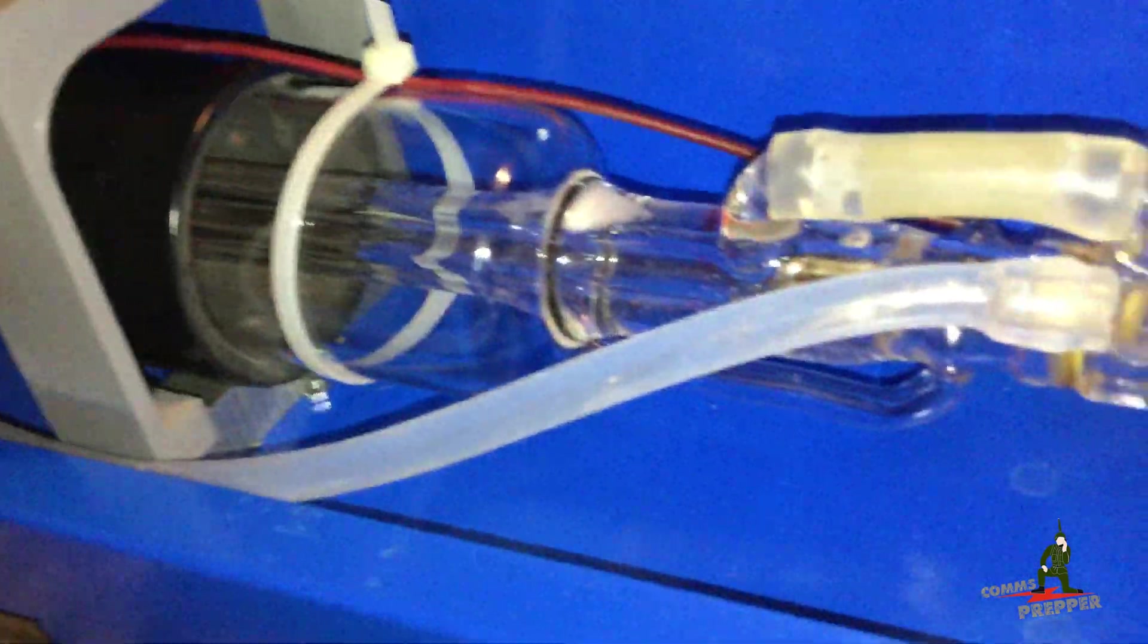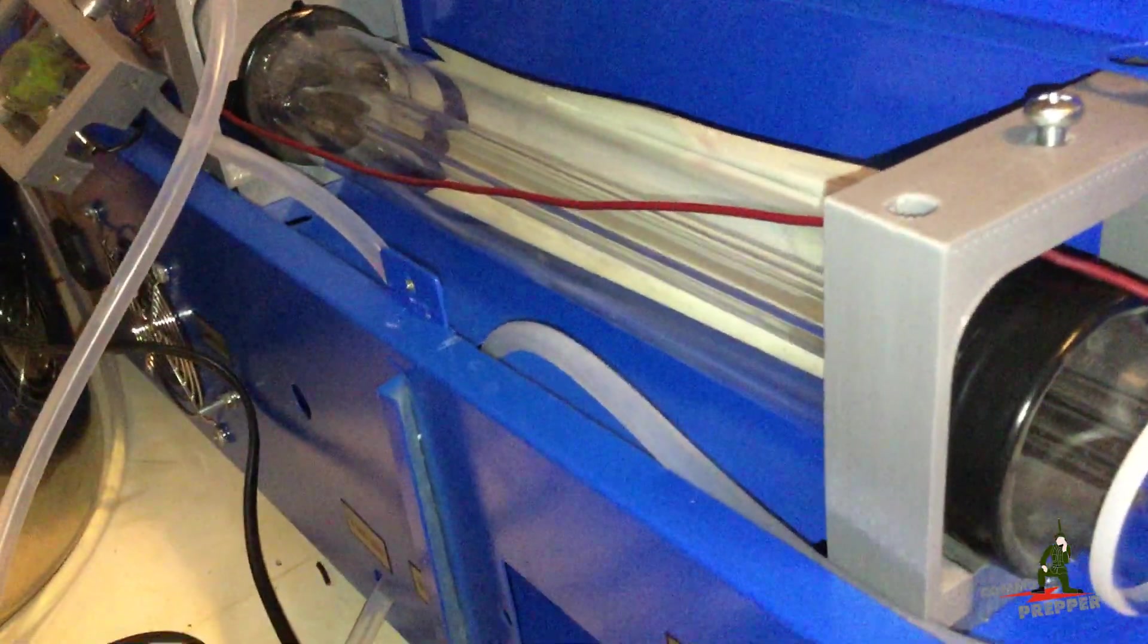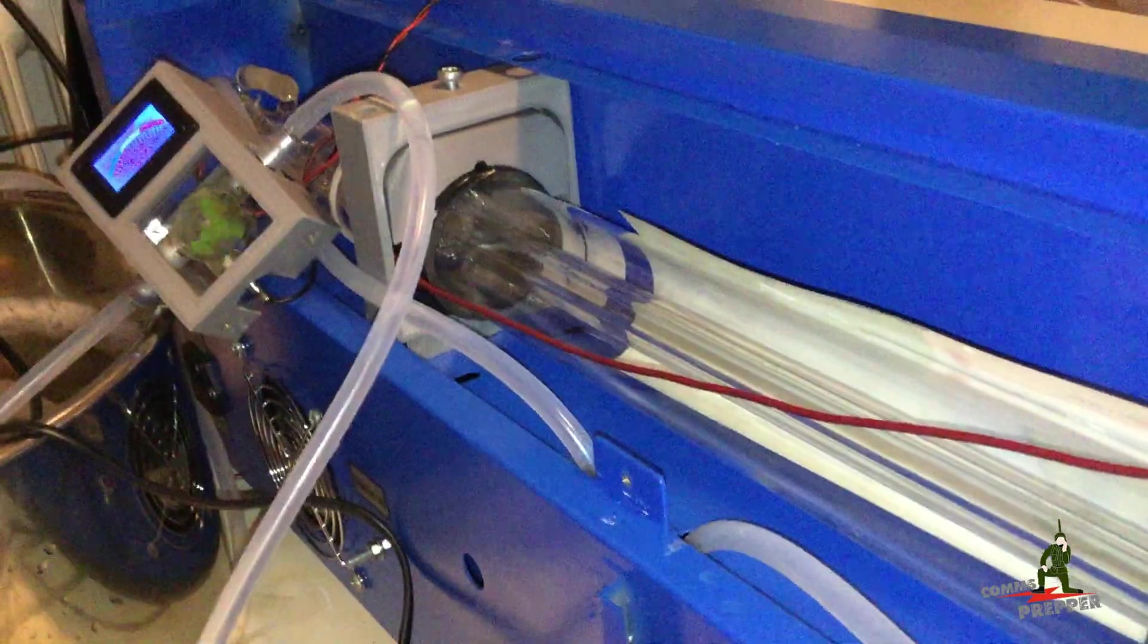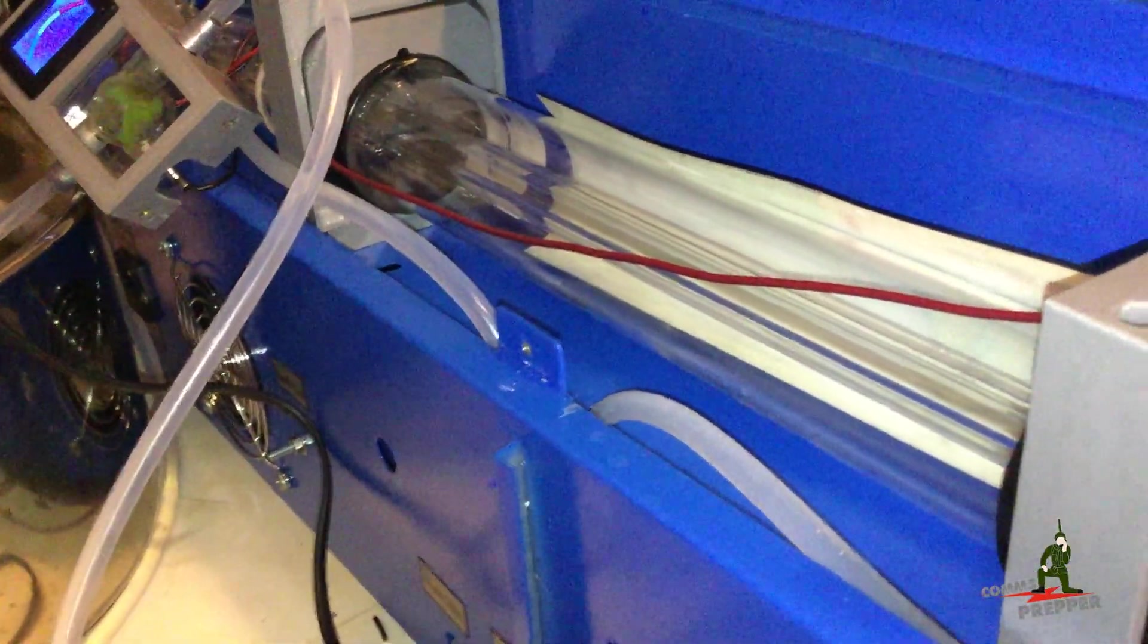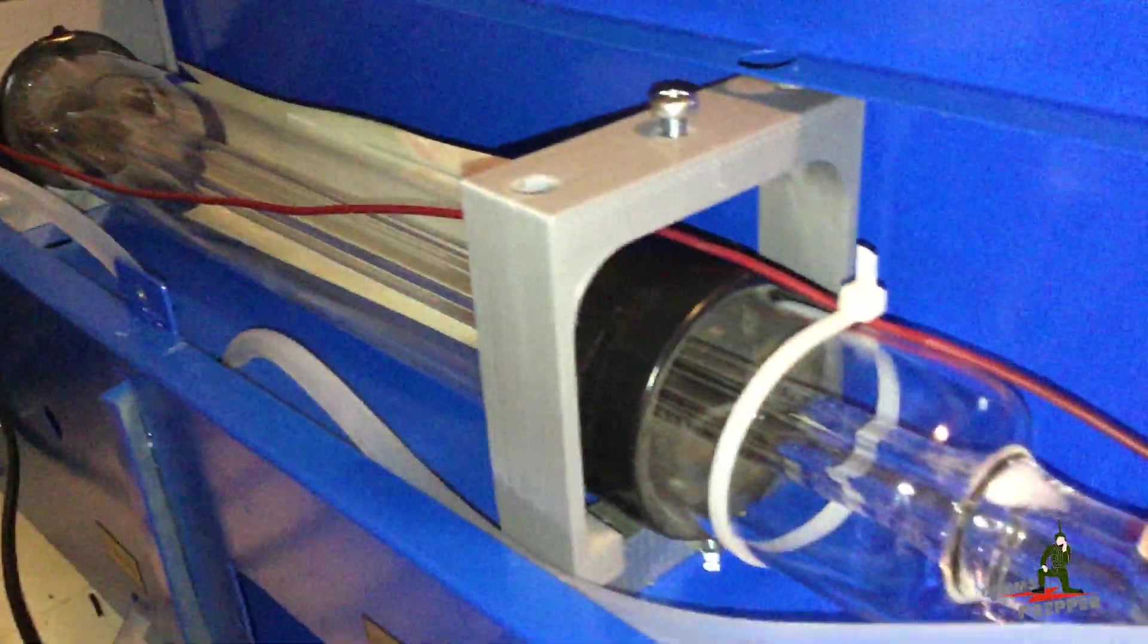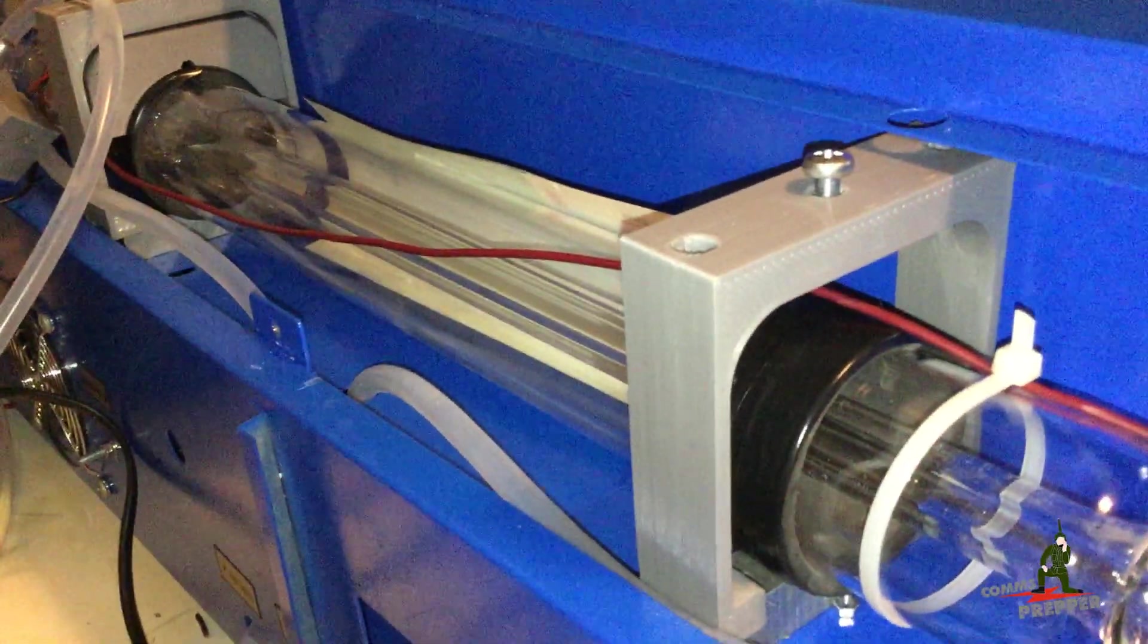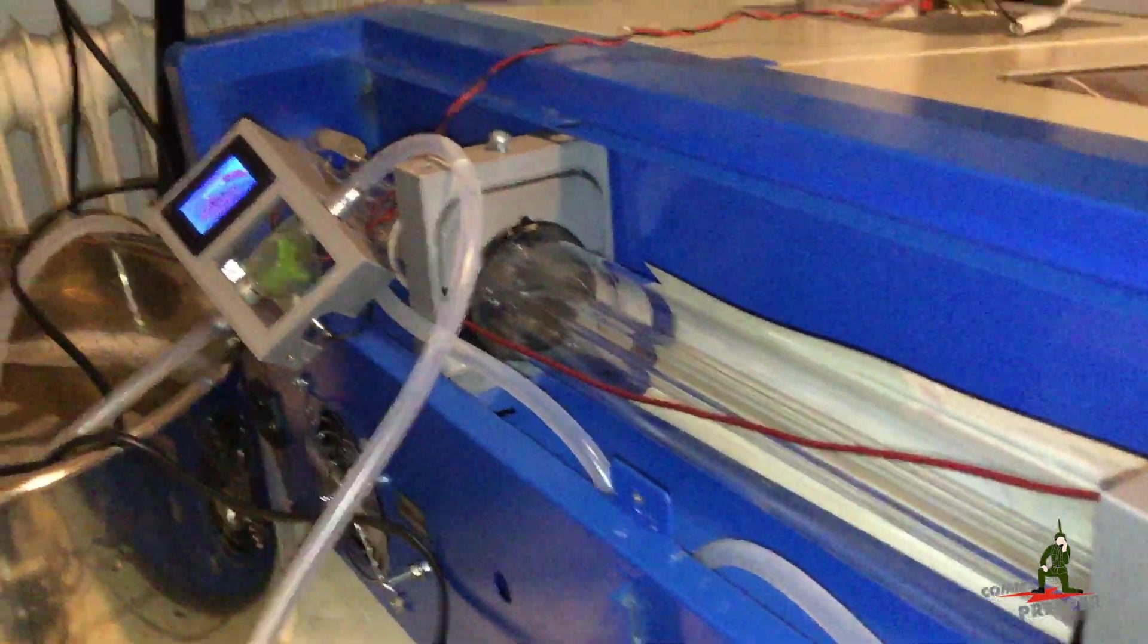So I probably have another week or two on this project getting this thing up and running. The power supply blew. I think this machine was actually dropped because everything was twisted and bent out of alignment so I had to 3D print a lot of parts. I put those on Thingiverse. If you look for K40 laser you might find them under comms prepper, but hopefully I'll get this thing up and running and I can use this to start cutting material like acrylic and plywood to further my amateur radio hobby and emergency preparedness.